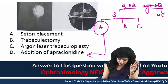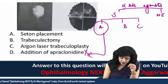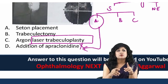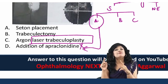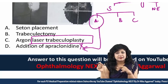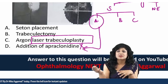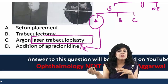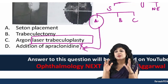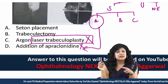Option C is argon laser trabeculoplasty. Laser trabeculoplasty is the treatment of choice for prophylaxis of the fellow eye in open-angle glaucoma. So if the left eye has open-angle glaucoma, we can do laser trabeculoplasty in the right eye to prevent advanced changes. It is not the best treatment for the affected eye itself, so this option is also eliminated.